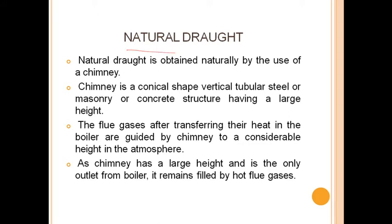Natural draught is basically obtained by the use of a chimney. Chimneys are conical in shape and are vertical tubular steel structures having a large height. The flue gases, after transferring their heat in the boiler, are guided by the chimney to a considerable height in the atmosphere. As the chimney has a large height and is the only outlet from the boiler, it remains filled with hot flue gases.